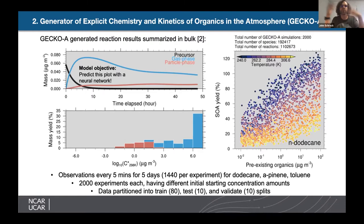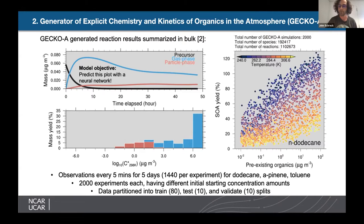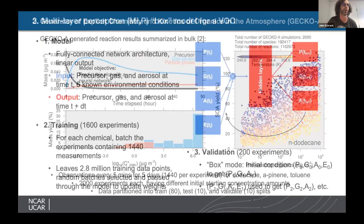We generate 2,000 examples for different initial conditions for three species: dodecane, alpha-pinene, and toluene. Simulations run out for five days with data saved every five minutes. For dodecane alone, these 2,000 examples visited more than 200,000 molecular species and saw more than a million chemical reactions. We consider two models. The first is a simple multi-layer perceptron, with inputs of precursor, gas, and aerosol at time T along with six environmental variables — temperature, solar zenith angle, preexisting aerosols, ozone, NOx, and OH — outputting the state one five-minute time step into the future.